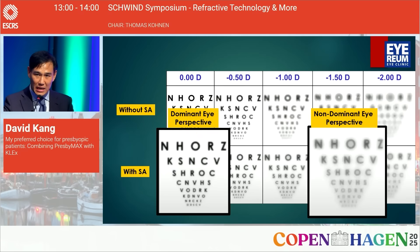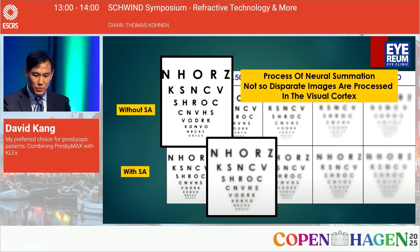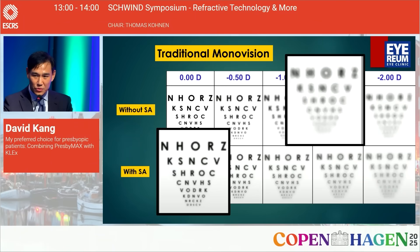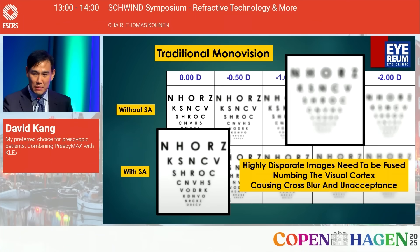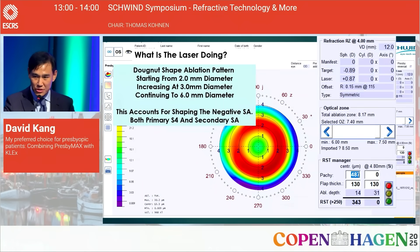The brain doesn't have to fuse two very different images from the dominant and non-dominant eyes; by bilateral neural summation, not-so-different images are processed in the visual cortex. Remember, we're doing CLEX, and CLEX doesn't really induce a lot of spherical aberration. This is a far cry from traditional monovision, where two very different images need to be fused, numbing the visual cortex, causing cross-blur, and eventual non-acceptance.